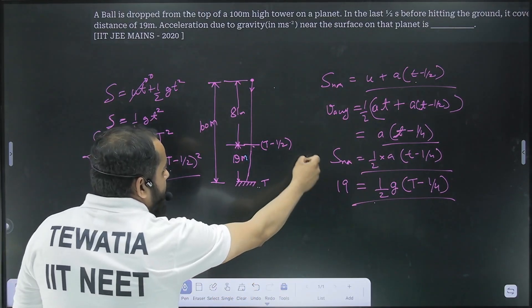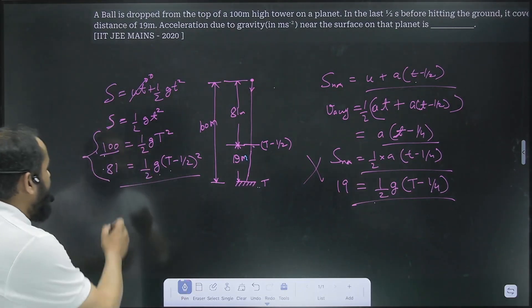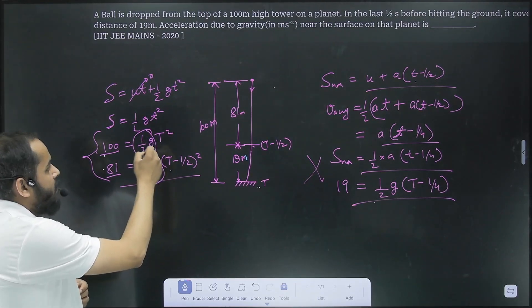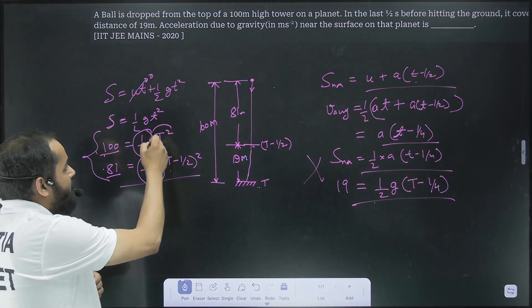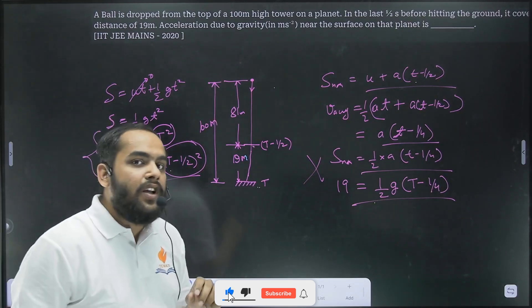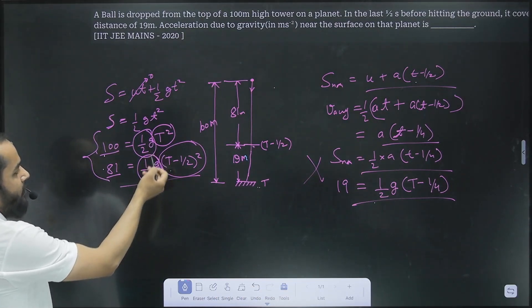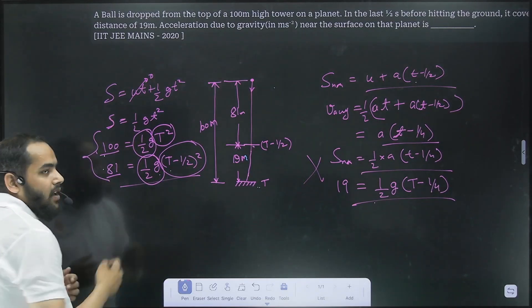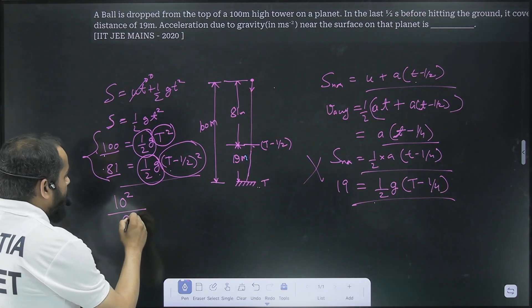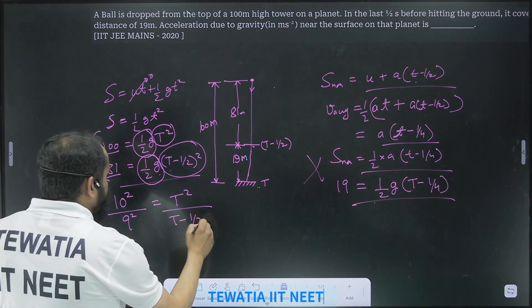100 is nothing but 10 squared, 81 here is 9 squared. We have 1 by 2g common in both these equations and then the rest of the term is squared in both. So instead of using the method of substitution what we can do here is simply divide these equations because that is going to eliminate one of the variables which is g. So we can write this as 10 squared over 9 squared equals t squared upon t minus 1 by 2 whole square.